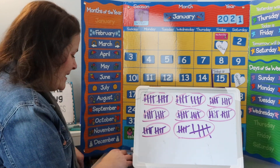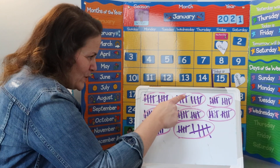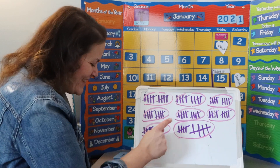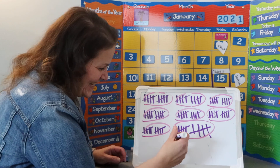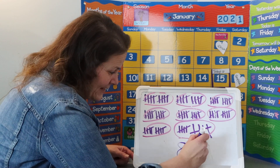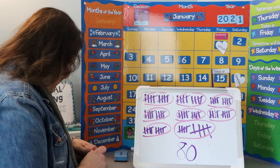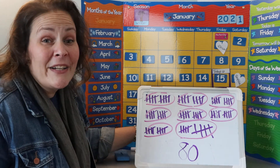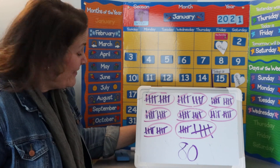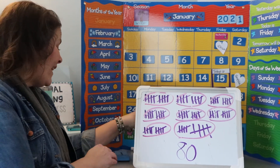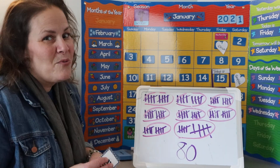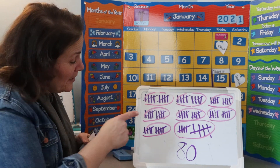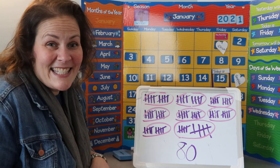How many days would that be? Now I have two fives so I can circle my group of ten. Ten, twenty, thirty, forty, fifty, sixty, seventy, eighty. Eighty days of school! I don't have any leftover ones. Ten, twenty, thirty, forty, fifty, sixty, seventy, eighty, ninety, one hundred. In twenty more days we will be at the one hundredth day of school. But today it's eighty days of school.